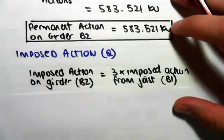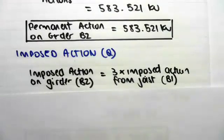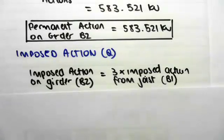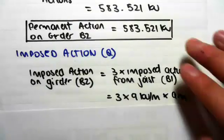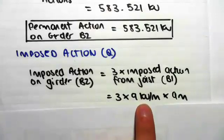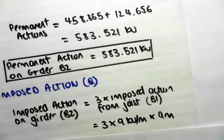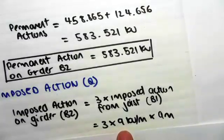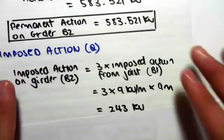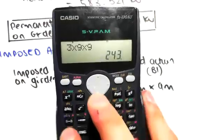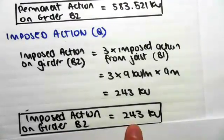Now the imposed action Q. The imposed action on the girder is three times the imposed action from the joist. The imposed action is applied once over the slab and transfers through — we don't apply it separately at each level. The imposed action on joist B1 was 9 kN/m, so it's 9 kN/m × 9 m × 3 = 243 kN. The imposed action on girder B2 is 243 kN.